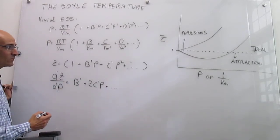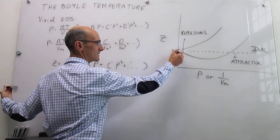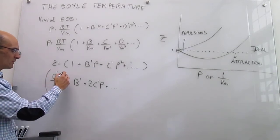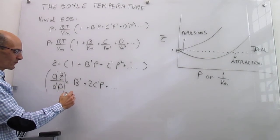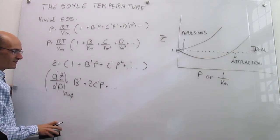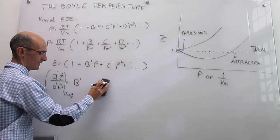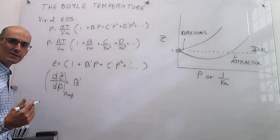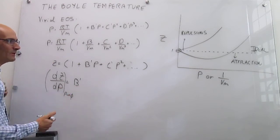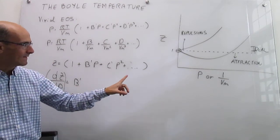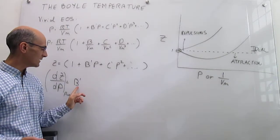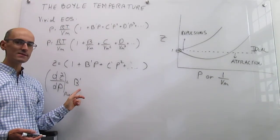Now we can recognize that the point of interest is the limit of low pressures. So we evaluate this first derivative at the limit where pressure goes to 0. Notice that if pressure goes to 0, the term 2C'p will be 0, and the only thing left over is the B' constant. So we are already learning about the virial coefficients from this simple scheme. In the particular case where attractions are dominant early on in the curve, that would mean that the B' constant would be negative.